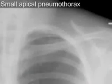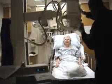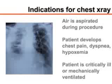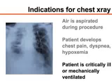Pneumothorax is uncommon after thoracentesis and, when present, it rarely requires the placement of a chest tube. Chest radiographs are not required after simple, uncomplicated procedures. Radiography of the chest should be performed if air was aspirated during the procedure, if chest pain, dyspnea, or hypoxemia develops, or if the patient is critically ill or undergoing mechanical ventilation.